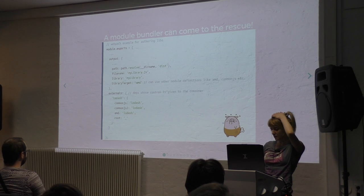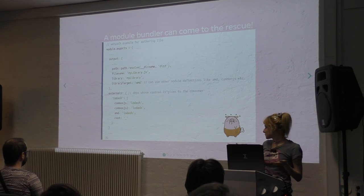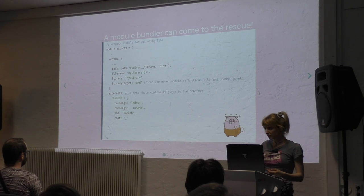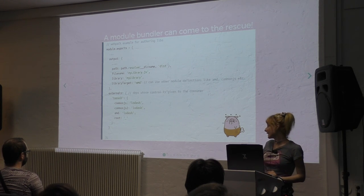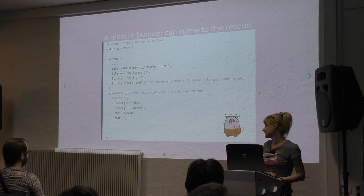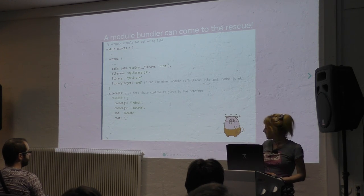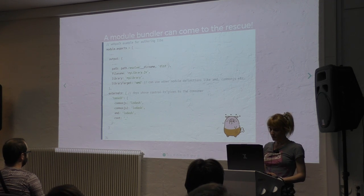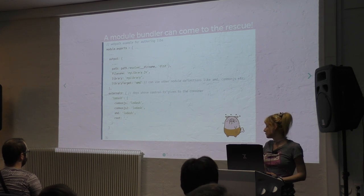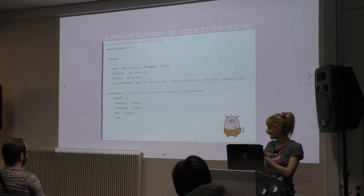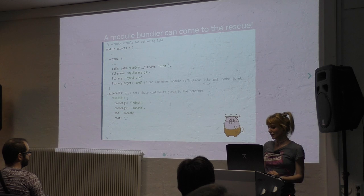The externals are basically what you do with peer dependencies in your package.json — you are taking things out of the bundle. Those are dependencies whose control is given to the consumer. You will be assuming that the consumer is going to take care of installing these dependencies. For Webpack, you have to define them in a specific case — it doesn't work the same way if you're expecting this to be included in another Webpack bundle. But for UMD, this is how you would do it.